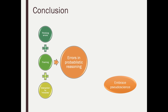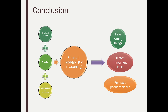My conclusion: if you combine all those thinking errors — framing, distraction by miracles, and the rest — it can really contribute to errors in probabilistic reasoning. That means we can fear the wrong things, think rare events will actually get us, ignore important facts and draw incorrect conclusions. And of course, if we don't understand how things work and display these thinking errors, we're much more vulnerable to believing pseudoscientific claims than if we root our decisions and thinking in probabilistic reasoning.